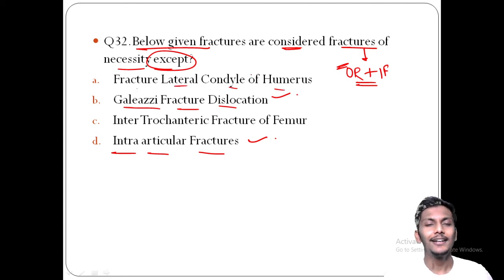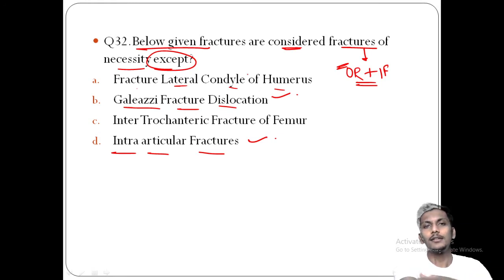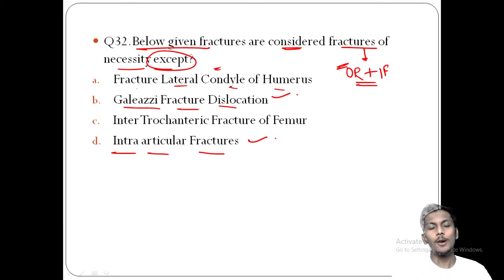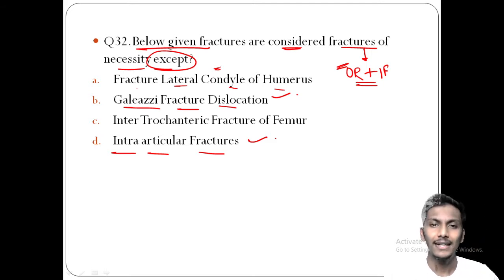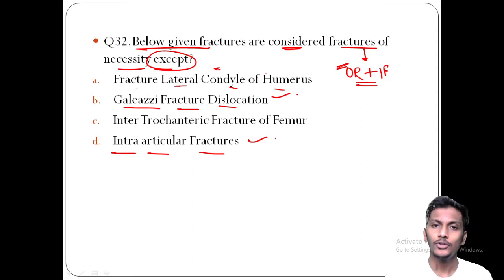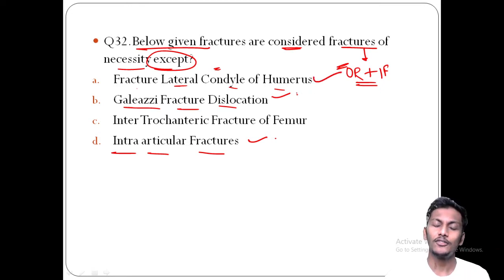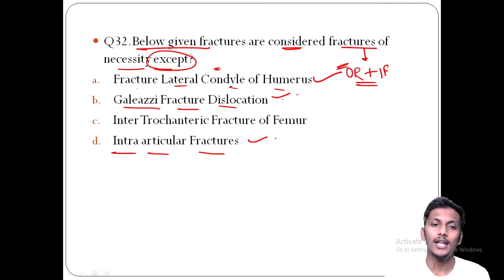Option A — fracture of the lateral condyle of humerus — is the common extensor origin for many forearm extensor muscles. If fractured, this common extensor origin is disrupted, leading to inability to extend the wrist and fingers. Therefore, lateral condyle of humerus fractures also require open reduction and internal fixation. The three fractures of necessity are: lateral condylar humerus fracture, Galeazzi/Monteggia fracture-dislocation, and intra-articular fractures.